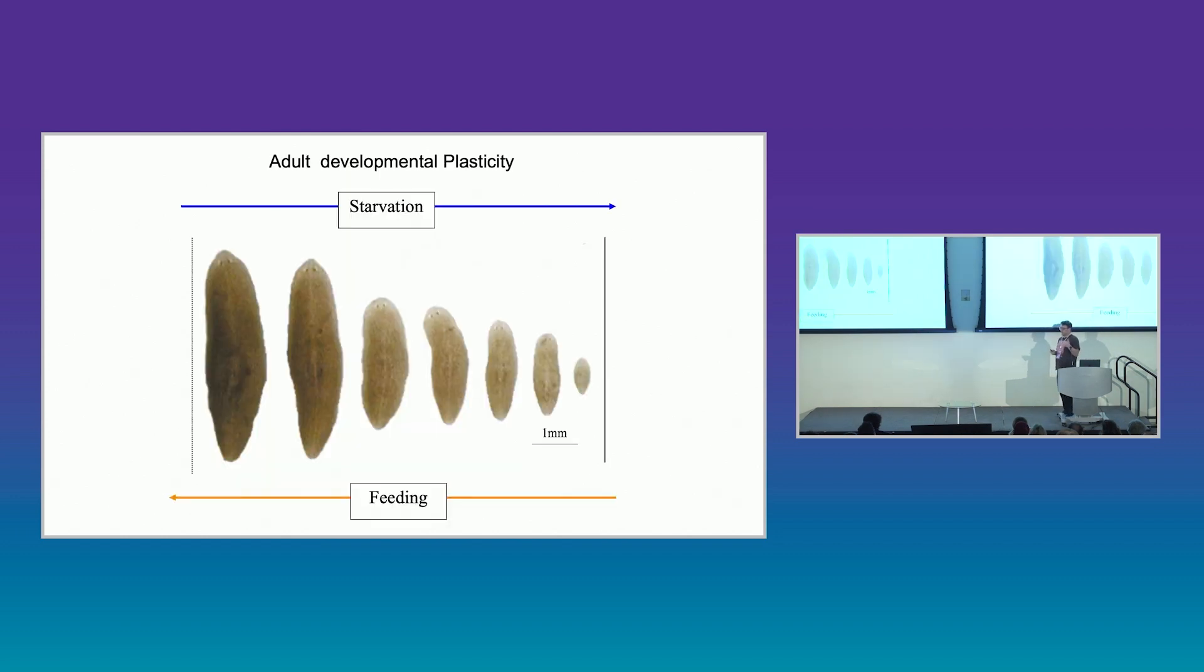Another feature of these animals to think about then, because of this plasticity, is that they're incredibly homeostatic. So we can starve and feed them, and they will shrink over a log scale and keep all their organs and tissues perfectly scaled, right down to a minimum size.